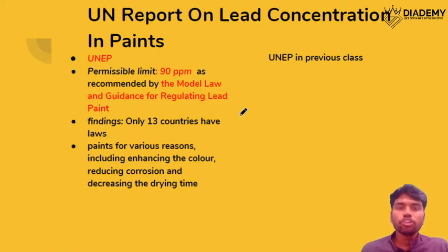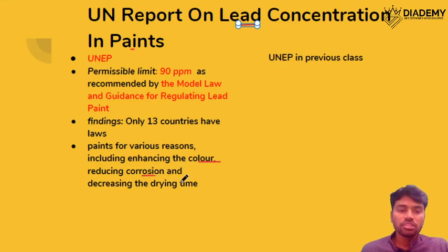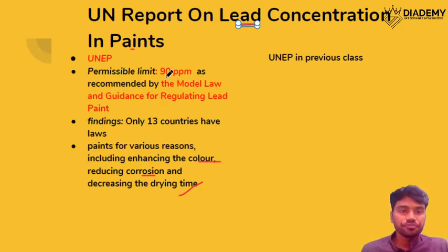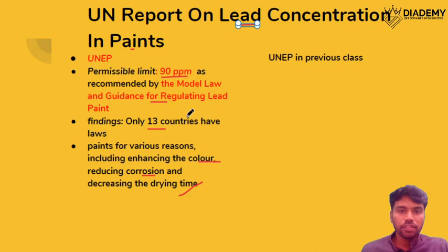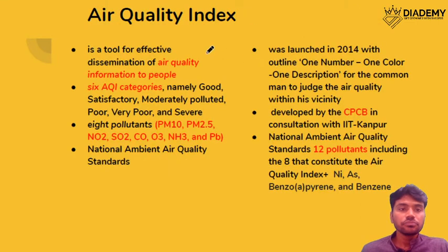The first topic is the United Nations report on lead concentration. Lead is used in paints for various reasons: color, reducing corrosion, and reducing drying time. There is a permissible limit of 90 ppm according to the model law and guidance for regulating lead paint. However, it is found that only 19 countries have been following this permissible limit. UNEP's secretariat also provides for other conventions like CBD and Minamata.